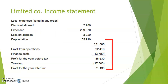Starting with the limited company income statement, the initial part — sales, cost of sales, gross profit, additional income and expenses — all stays the same. So right from the start all the way to the expenses section, everything stays absolutely the same. Normally you would finish off the income statement with a profit figure — your profit for the year.